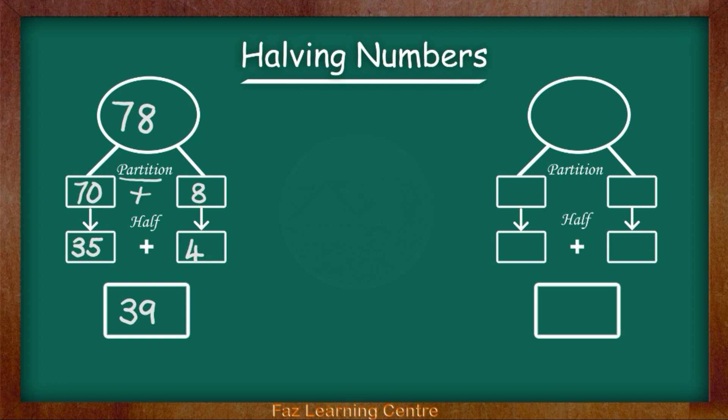Half of 78 is 39. My last example is 94. If I partition 94 I get 9 tens which is 90. How many ones does 94 have? It has 4 ones. Now I know 90 plus 4 equals 94. I have successfully partitioned the number 94.